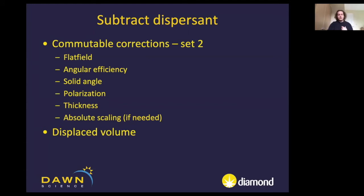We then need to subtract the dispersant. This commutable set of corrections addresses detector properties and beam properties, including a flat field correction to account for pixel-to-pixel variation in detector response. Statistically, it is incredibly unlikely that all pixels detect radiation equally, so we correct their values to be homogeneous.